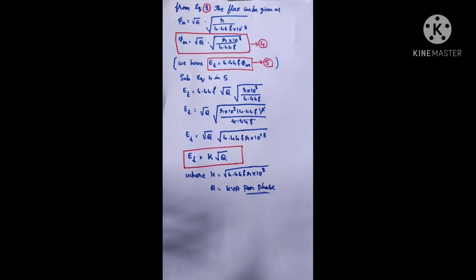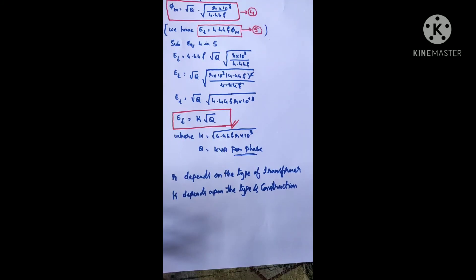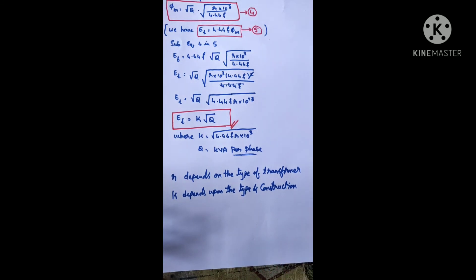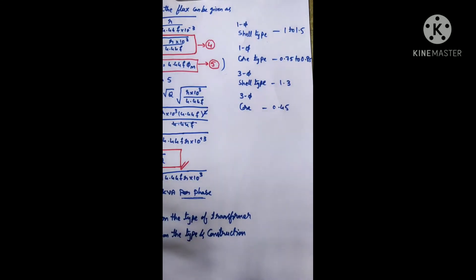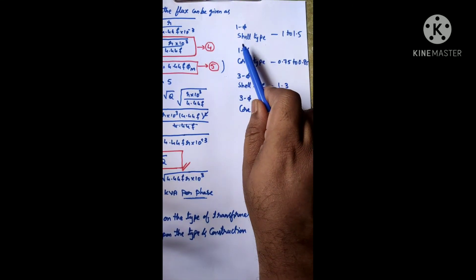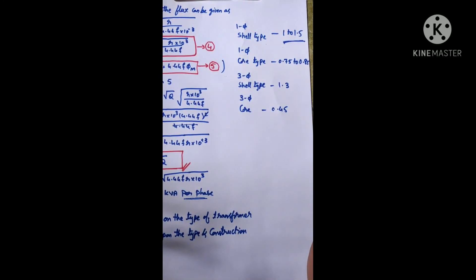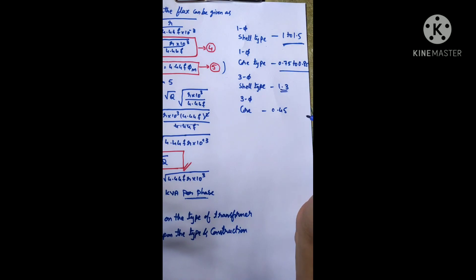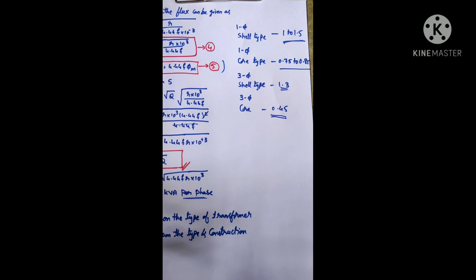This is the expression for EMF induced per turn, also called voltage per turn. The value of R depends on the type of transformer, and K is a constant that depends on both the type and construction of the transformer. For single-phase shell type, K ranges from 1.0 to 1.5; for single-phase core type, K is 0.75 to 0.85; for three-phase shell type, K is approximately 1.3; and for three-phase core type, K is 0.4 to 0.5.